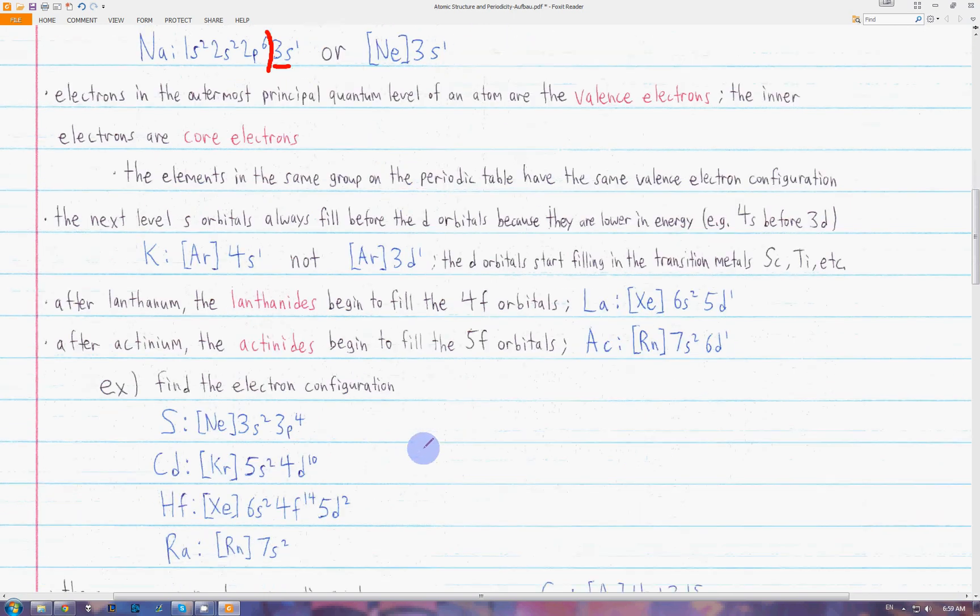Let's look at some examples. For sulfur, the previous noble gas closest to it is neon. Neon is 1s2, 2s2, 2p6. After neon, to get to sulfur, we go down a row, start at sodium. Sodium and magnesium will be the 3s2. Then we go across to aluminum, and we need 4 to get to sulfur, so 3p4.